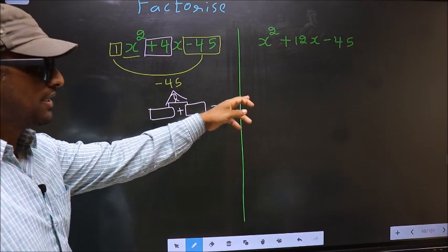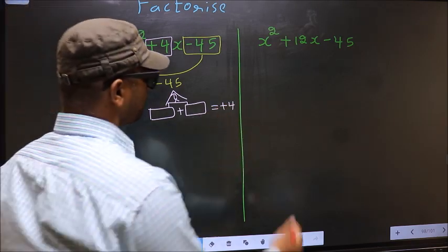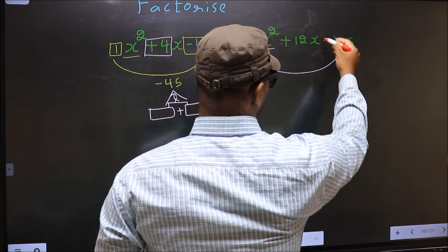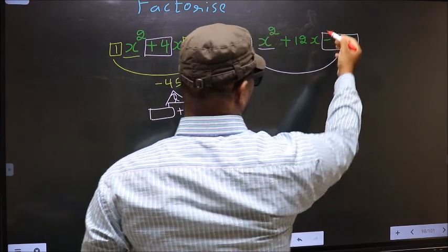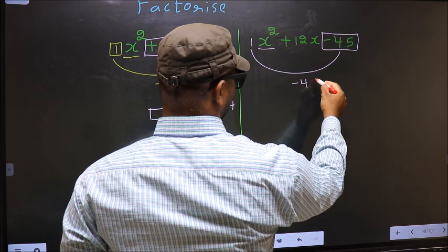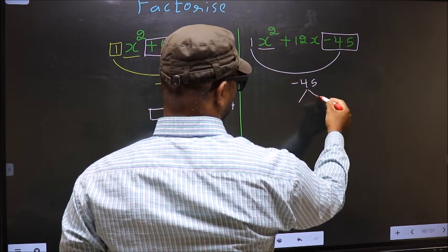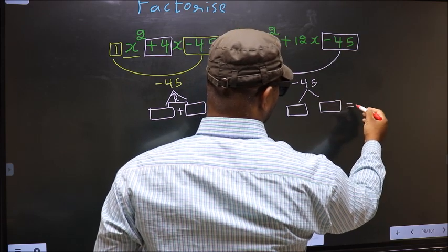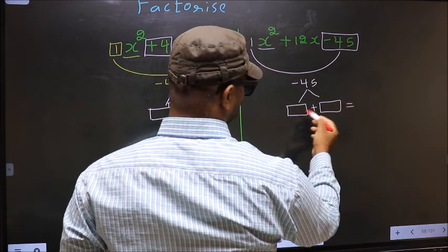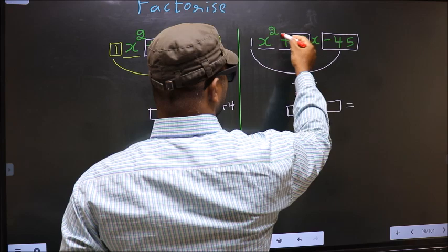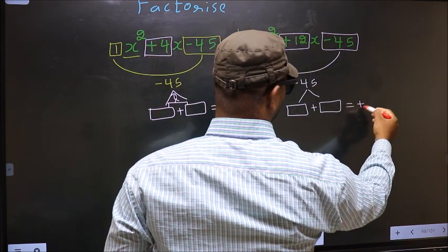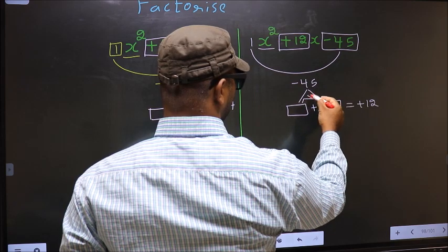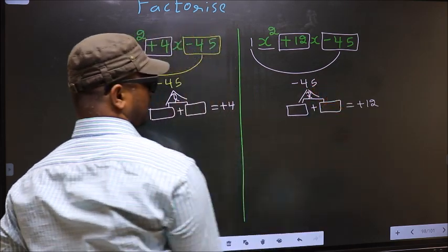Do the same thing for the second expression. Here the x squared coefficient 1 multiplied by the constant minus 45 gives minus 45. Now look out for two numbers such that when you add them you get the middle coefficient plus 12, and also when multiplied you get minus 45.